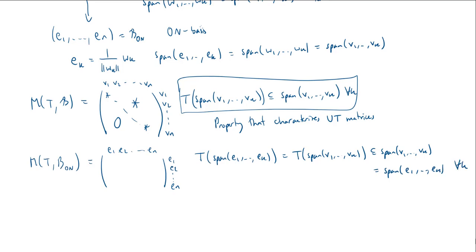And again, this property characterizes upper triangular matrices, and therefore, we must have an upper triangular matrix. So this implies the matrix of T with respect to BON is upper triangular. And there we go.